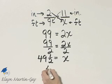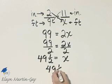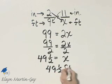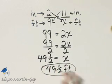What does that mean? It means the length of the home is actually 49 and 1 half feet.